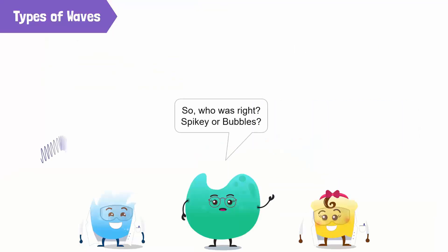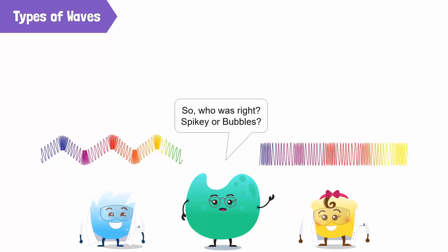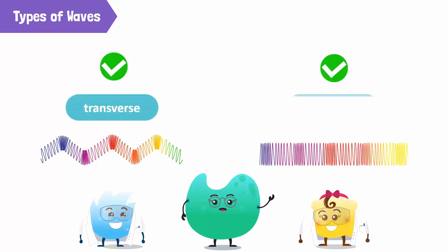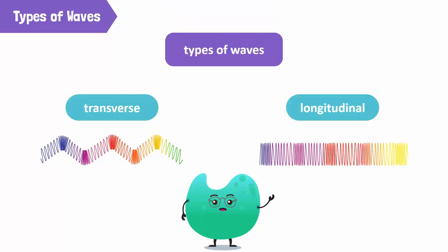So, who was right — Spiky or Bubbles? Well, both. Spiky produced transverse waves and Bubbles produced longitudinal waves with their slinky spring. So, we now know that there are two types of waves: one, transverse waves; two, longitudinal waves.